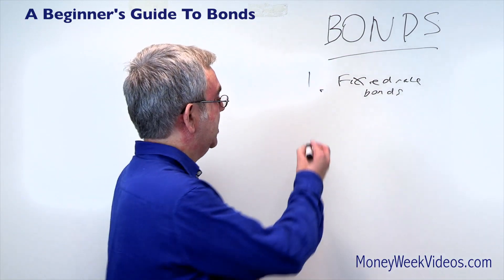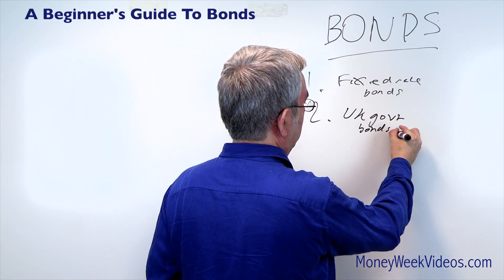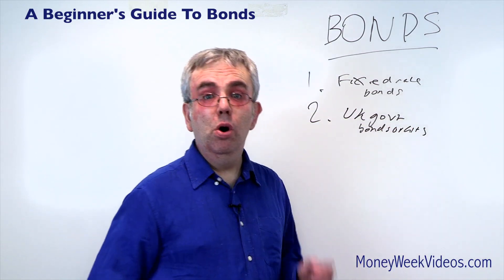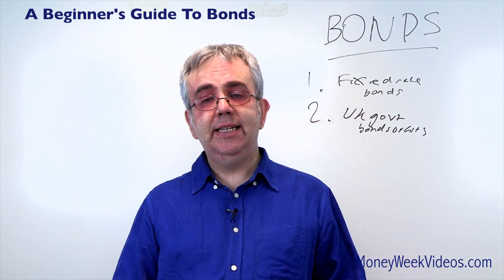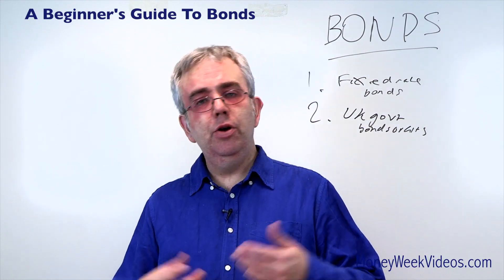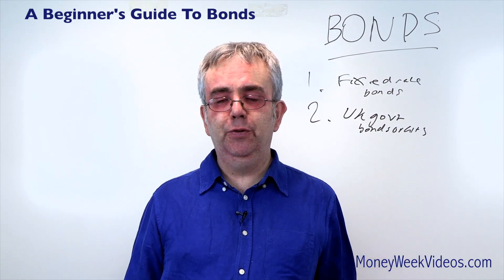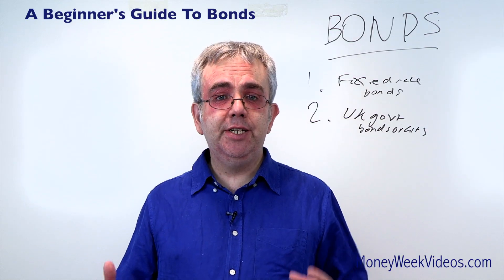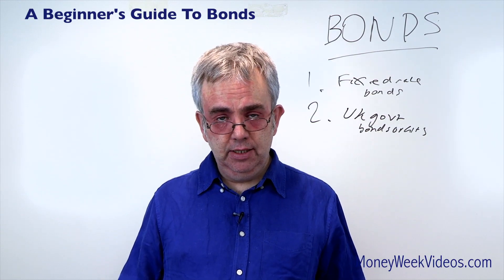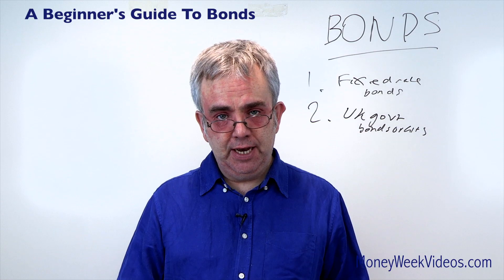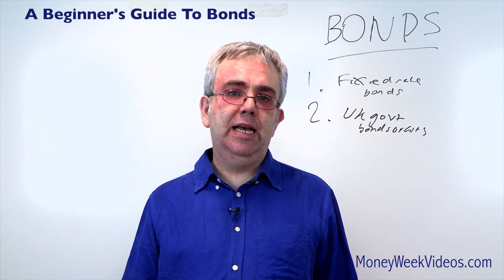The next kind we've got are UK government bonds, or gilts. If you buy a gilt you're basically lending money to the government and you get an IOU in return. The government is always launching new gilts, so let's imagine next week you went and bought a newly issued gilt — it might be a 25-year term paying a three percent return. So if you invested one thousand pounds in this new gilt, you get thirty pounds a year for the next 25 years, and then at the end of the 25 years you get your one thousand pounds back.